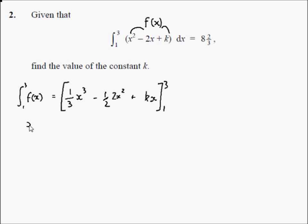You have 3 cubed over 3 minus, well a half times 2 is 1, so just minus 3 squared plus k times 3.